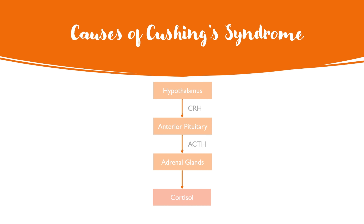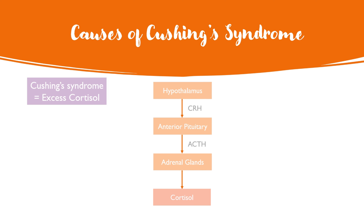The dexamethasone suppression test can help to diagnose Cushing syndrome, but it can also help to find the cause behind it. I'll quickly run through the causes of Cushing syndrome here — I do have a full video about the condition linked here as well. As a quick recap, Cushing syndrome involves excess cortisol in the blood. To remember the causes, something can go wrong with each stage of the HPA axis.